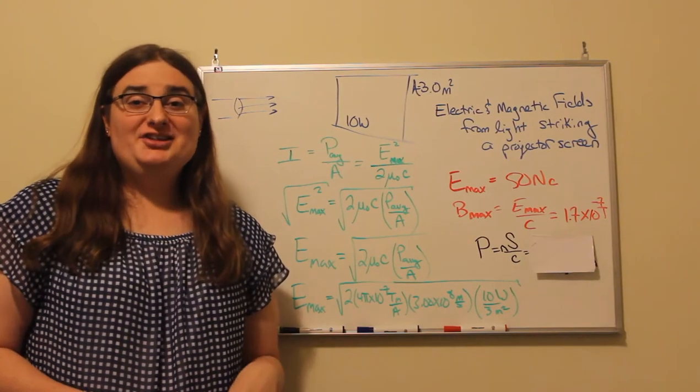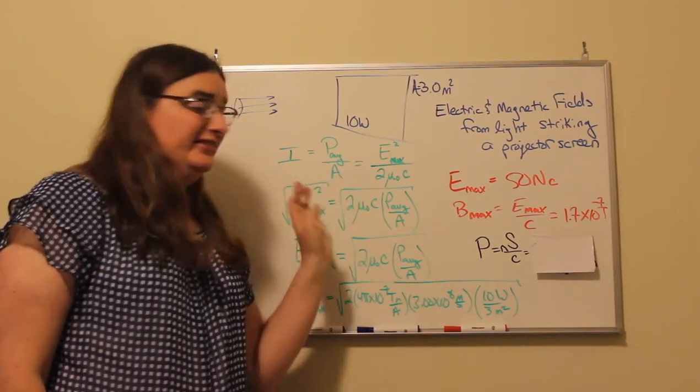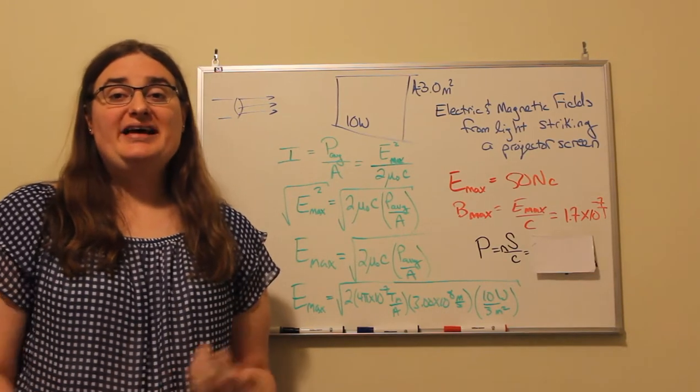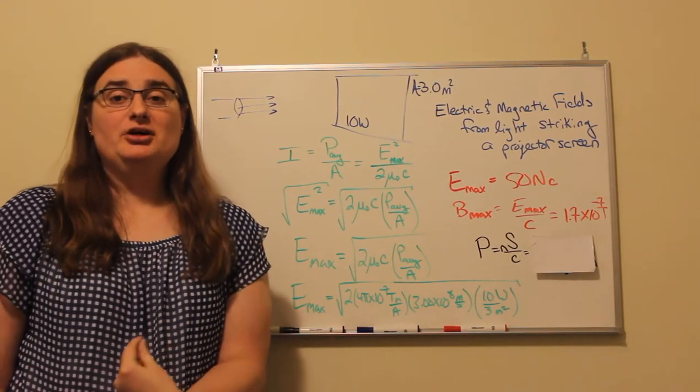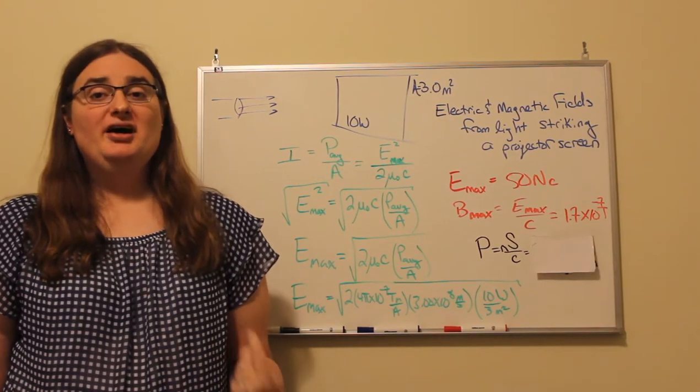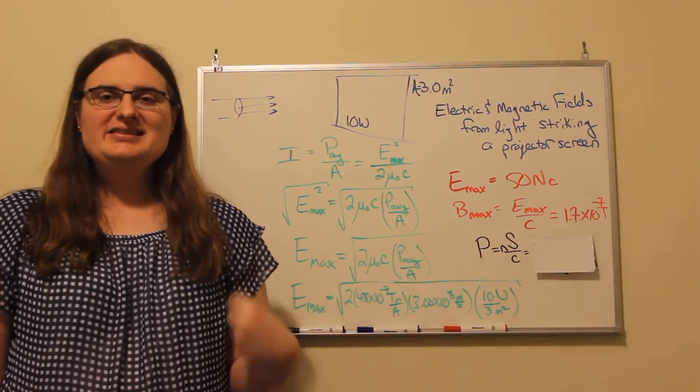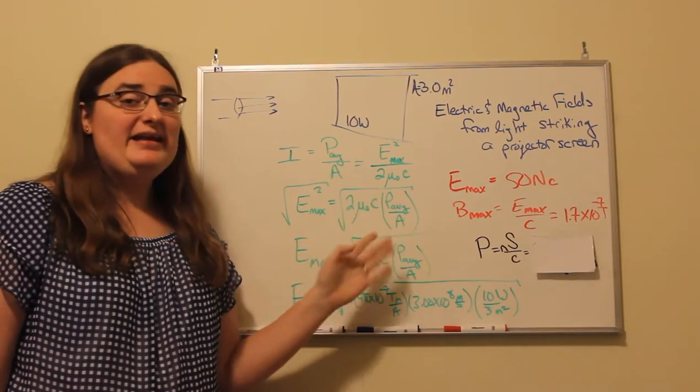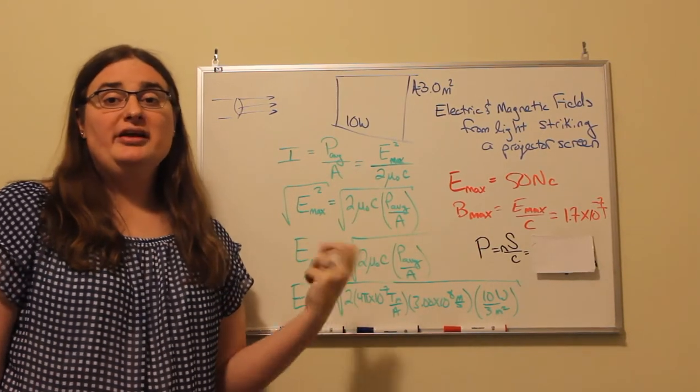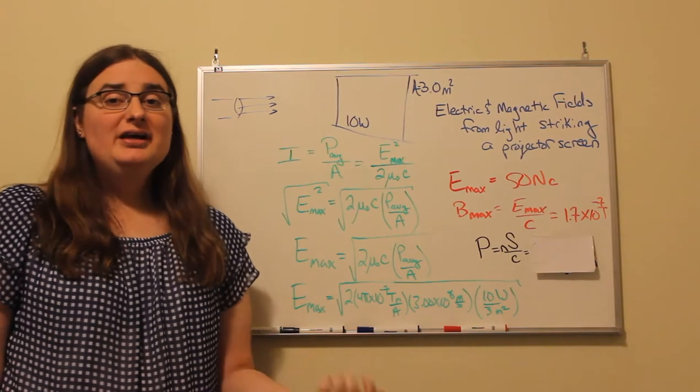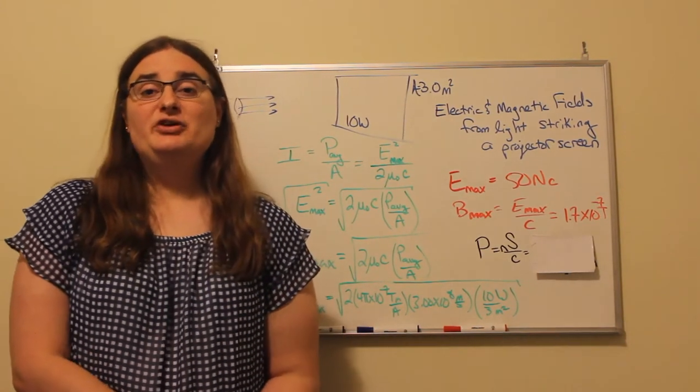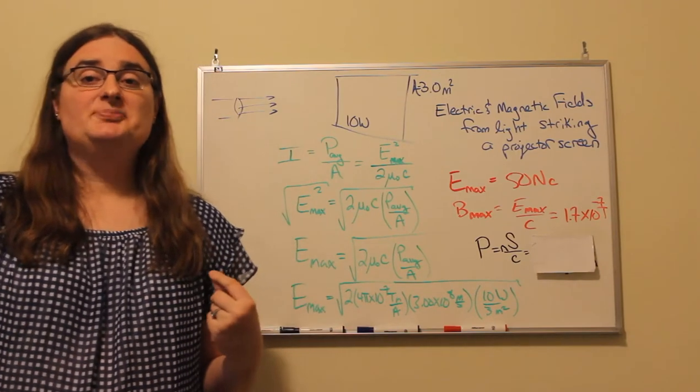Hi, we aren't in a regular lecture hall and this clearly isn't a presentation from a typical lecture hall projector, but I want to talk about the intensity of the electric field that would be created at the screen of a projector in a typical classroom setting and also from that electric field, the magnetic field that we would be expecting.